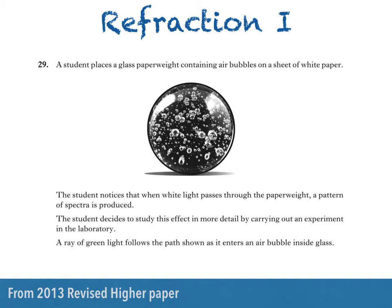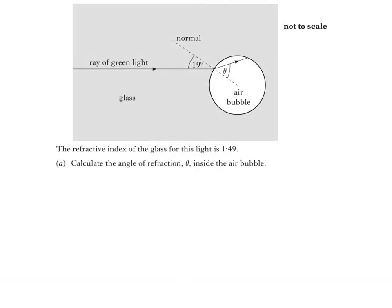A ray of green light follows the path shown as it enters an air bubble inside glass. Then we see the following diagram. We're told that the refractive index of the glass for this light is 1.49, then asked to calculate the angle of refraction theta inside the air bubble.